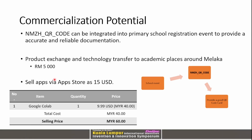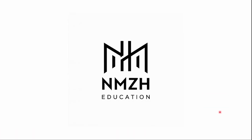Regarding commercialization potential, the technology could be integrated into primary school registration or sports day events to provide accurate and reliable documentation of each participant. We plan to sell this technology to academic institutions around Melaka for approximately 5,000 ringgit, and also plan to list the app on the App Store or Google Play at up to 15 USD. We position ourselves as a middleman between school event organizers and QR code card provision for every event.